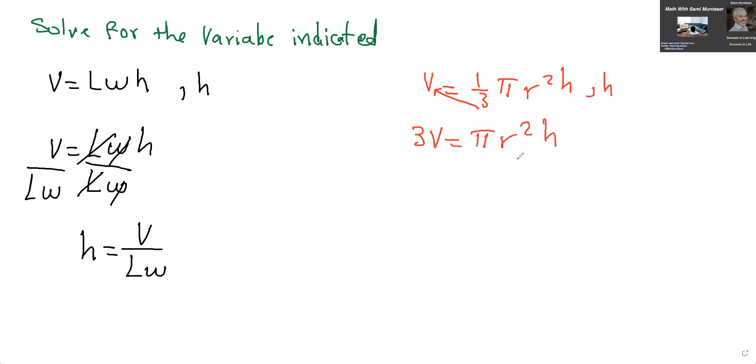Now you want to isolate the H. You divide both sides by pi r squared, and that will cancel, and we'll have H isolated, and it will equal 3V over pi r squared. Okay, so we'll try a few more, make them a little bit harder and more challenging.